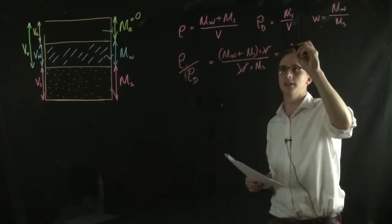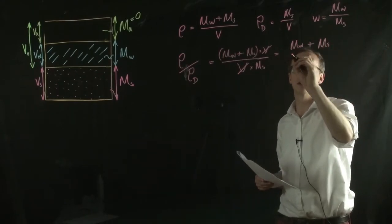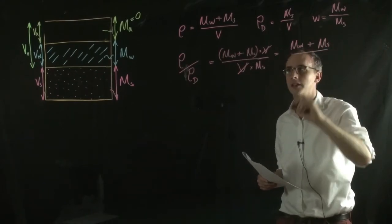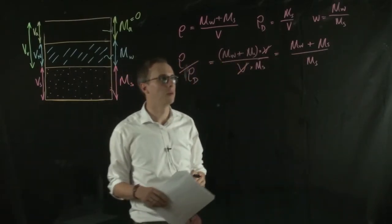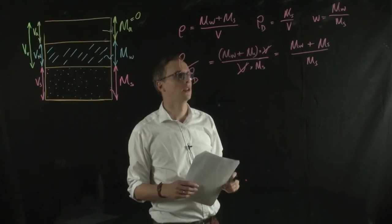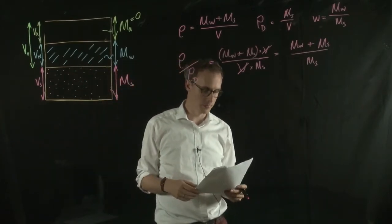And you can see that both these Vs cancel out. So what we're left with is the mass of the water, plus the mass of the solid, all over the mass of the solid. So that's if we take the bulk density and we divide it by the dry density, that's what the relationship looks like in terms of this three-phase parameter model.